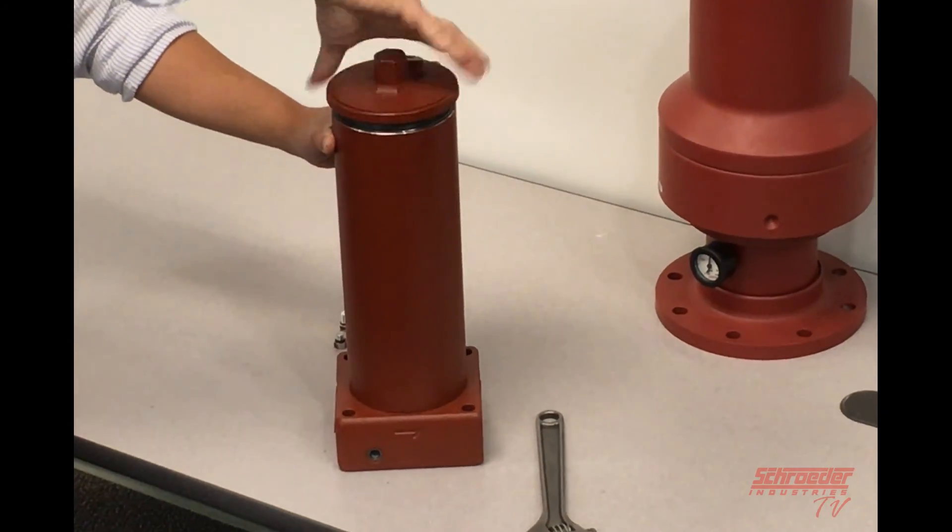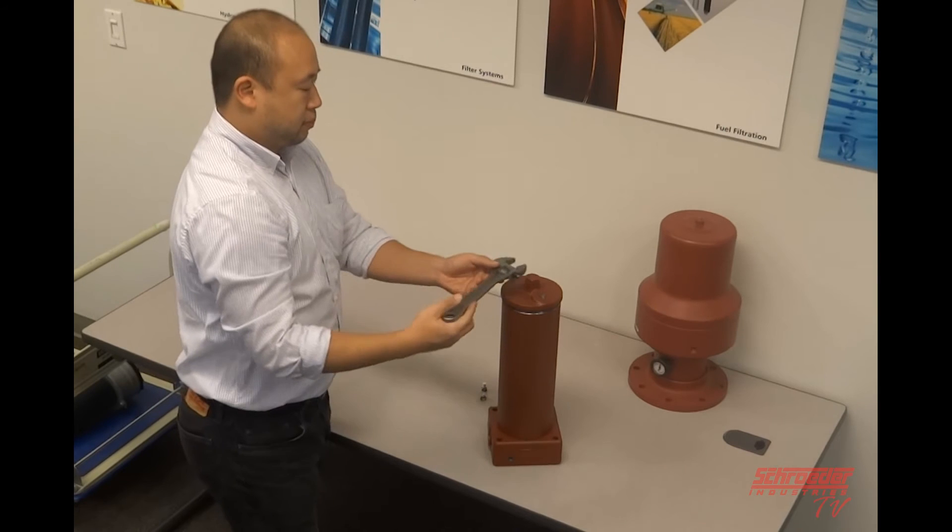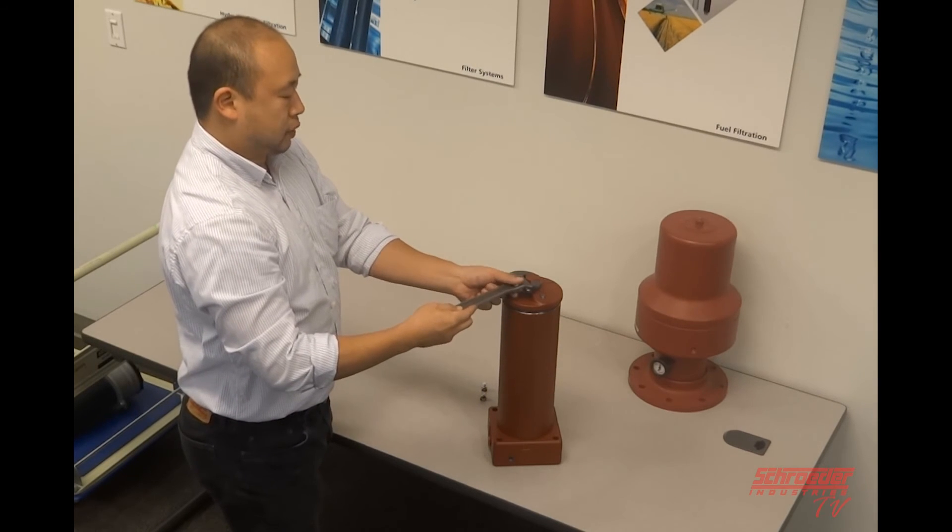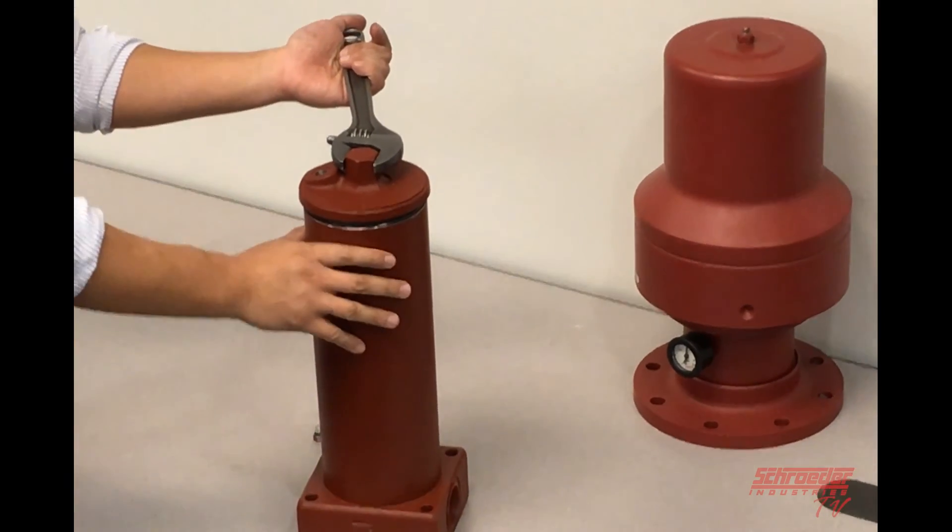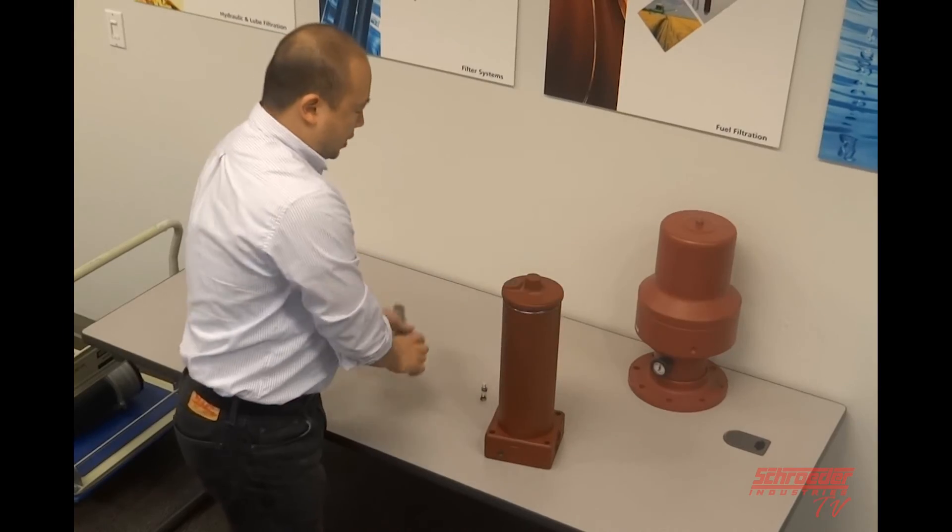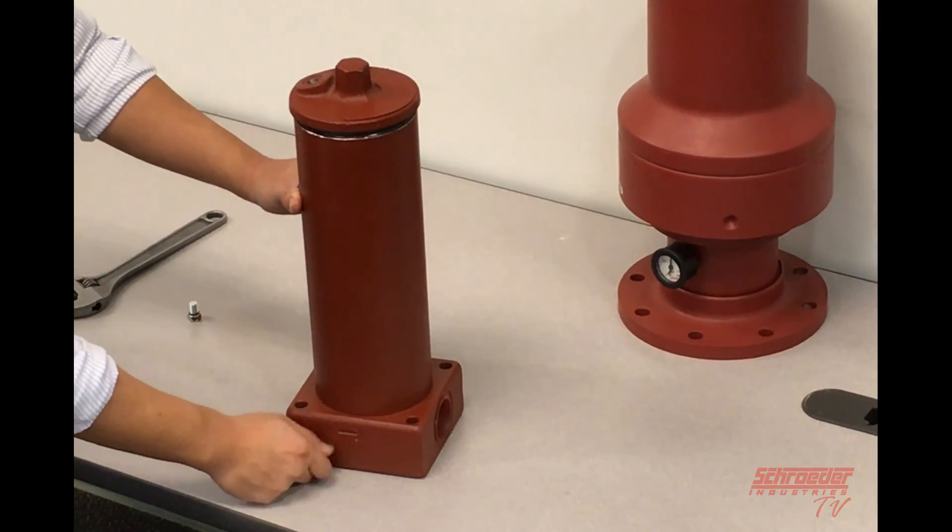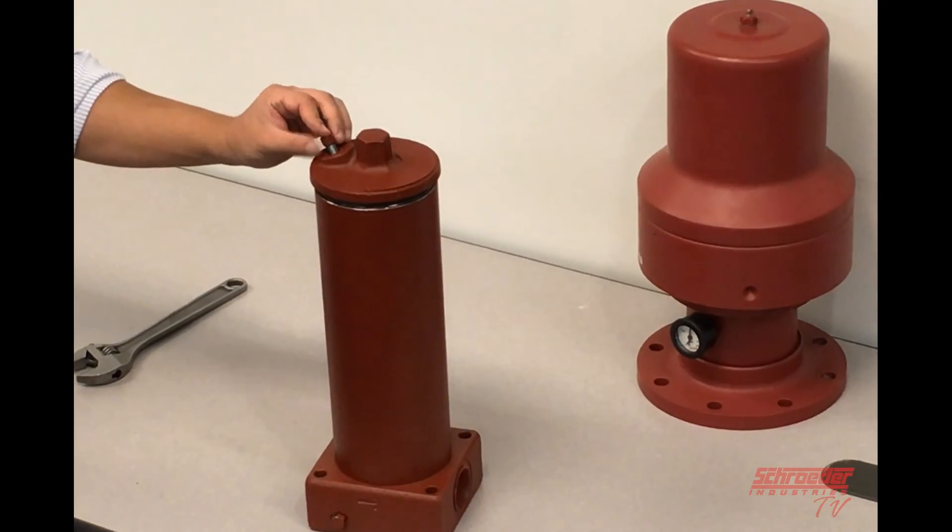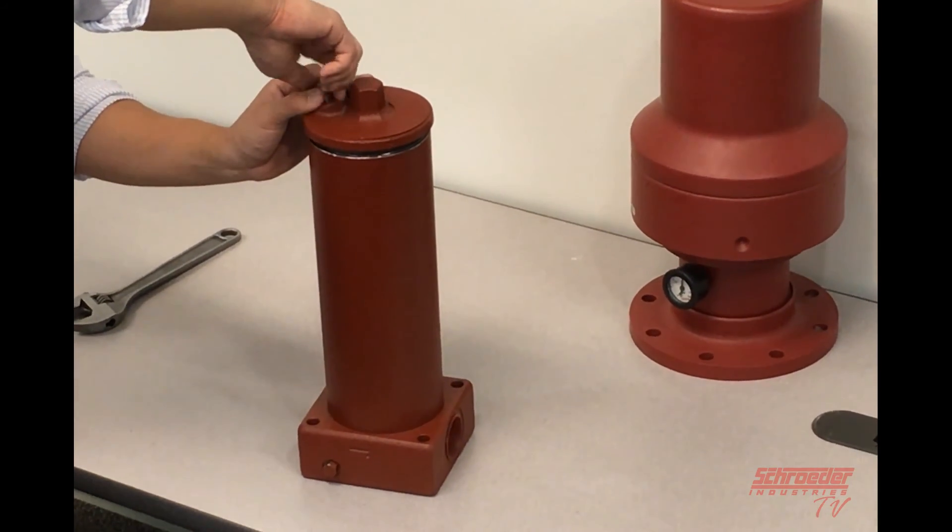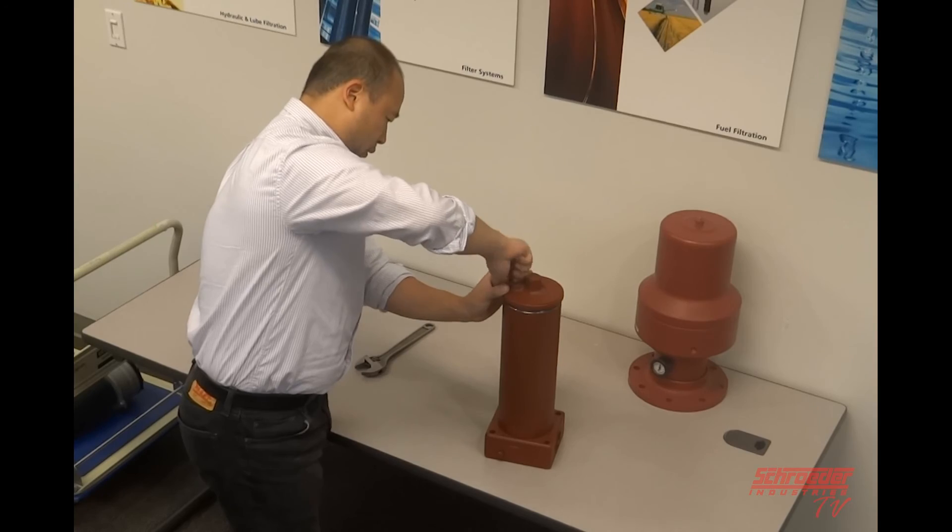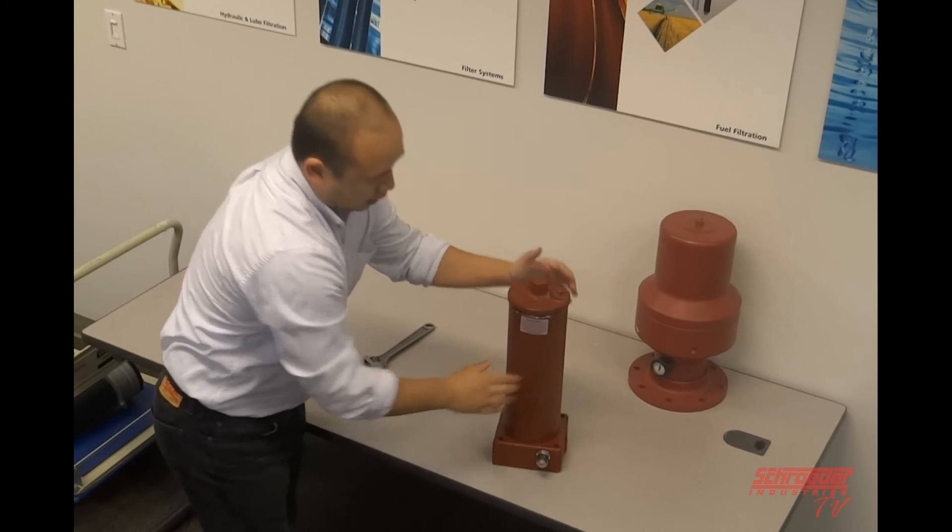And we replace the cap of the housing. And again, it depends on the customer. The pressure for the cap may be different. Usually it's 100 pounds, but it could be more. Or it could be less, depends on the application. So you just want to use a torque wrench to make sure that the pressure is accurate. So once that's tightened down, we want to replace the drain plug and then the bleed plug. And then we connect the inlet and outlet back in and the element is changed.